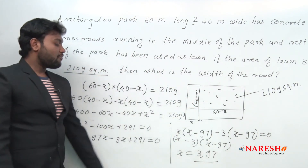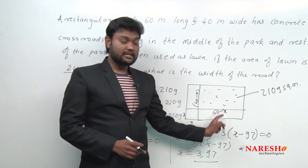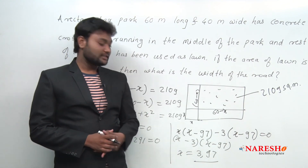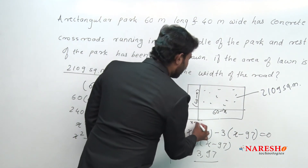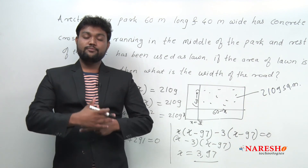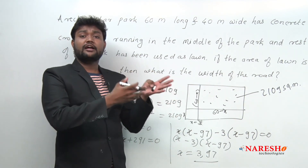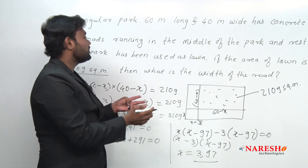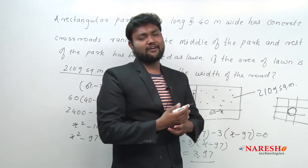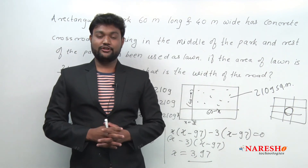We have two values of x: 97 and 3. But which value do we consider? We have to consider 3, because the length of the road is 60 and 97 is greater than 60, so x cannot be 97. Therefore the width of the road is 3 meters. In this way this is the shortcut for solving such kind of question. Thank you for watching this video under Naresh IT.